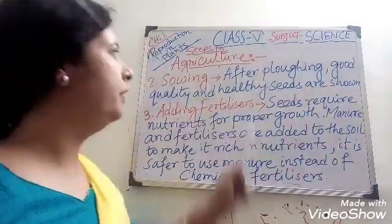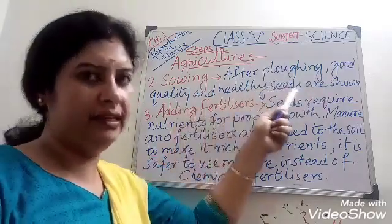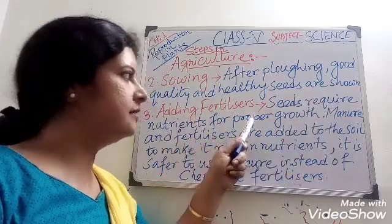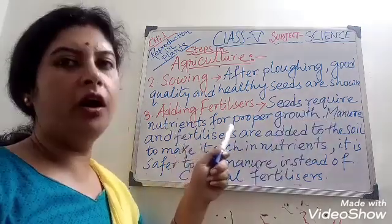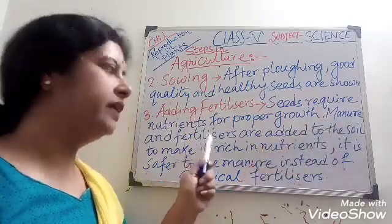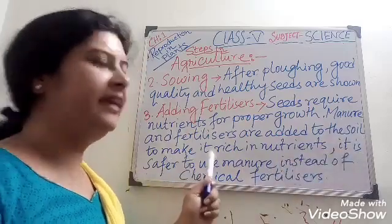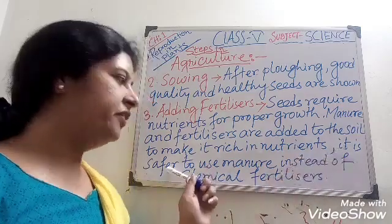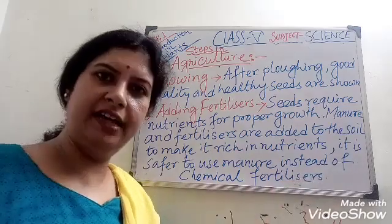Number two, sowing. After plowing, good quality and healthy seeds are sown. Number three, adding fertilizers. Seeds require nutrients for proper growth. Manure and fertilizers are added to the soil to make it rich in nutrients. It is safer to use manure instead of chemical fertilizers.